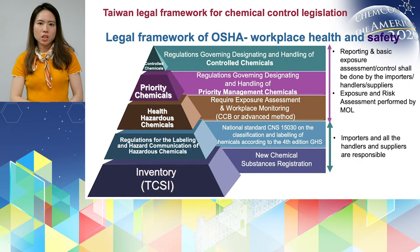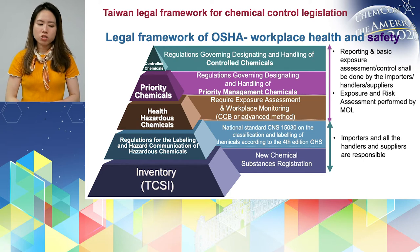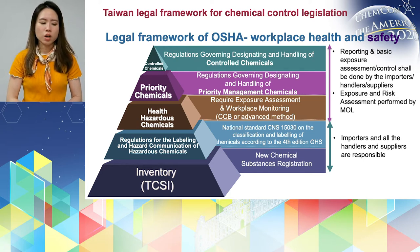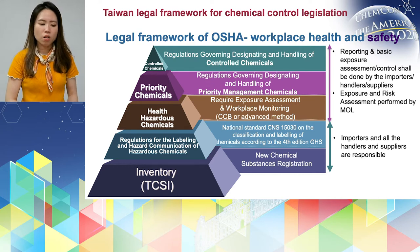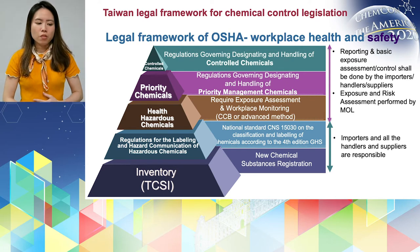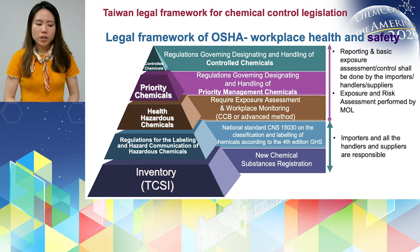Let's take a look at the legal framework under OSHA regarding workplace safety and chemical management. Looking at this pyramid structure, we can see the base of everything is inventory and GHS. These obligations require importers, handlers, and suppliers to be responsible. For a higher tier, measures include control banding, required exposure assessment or workplace monitoring and reporting for priority chemicals, and application for permission for control chemicals.